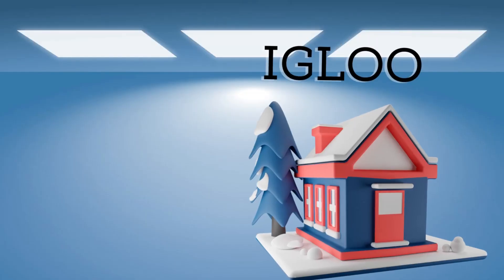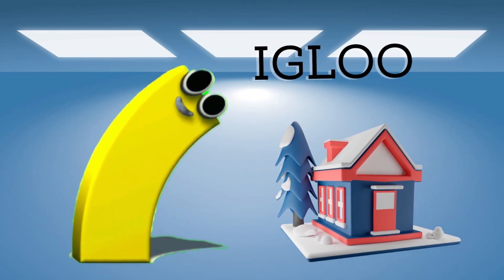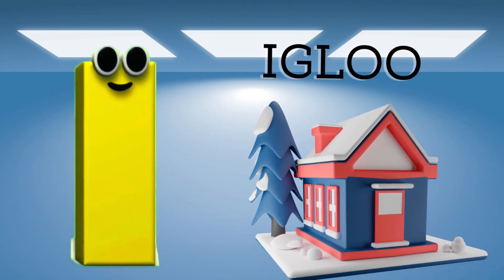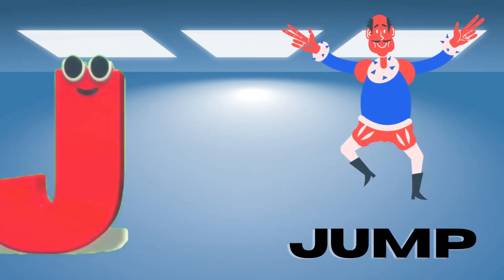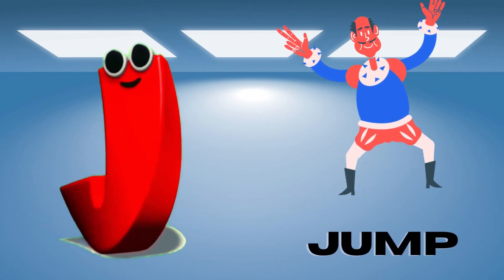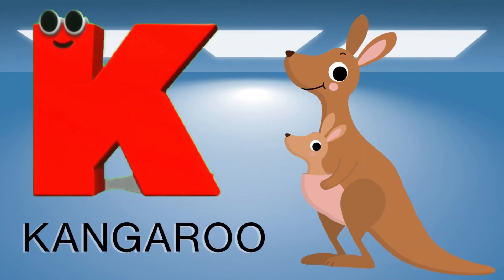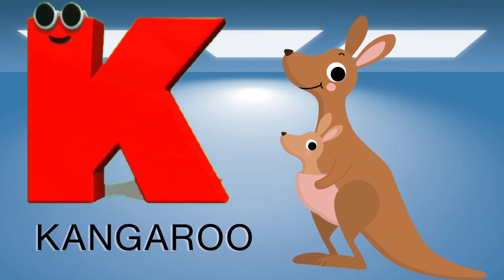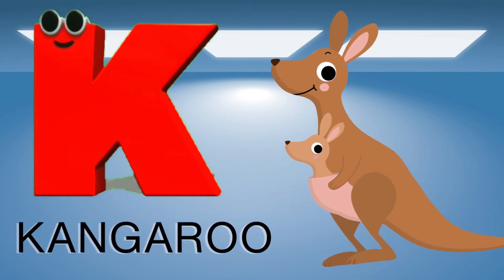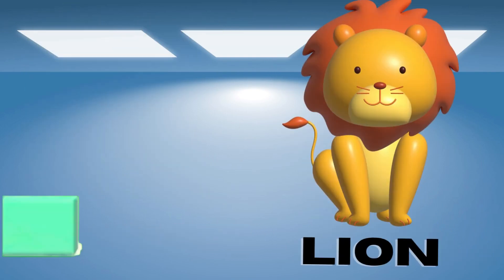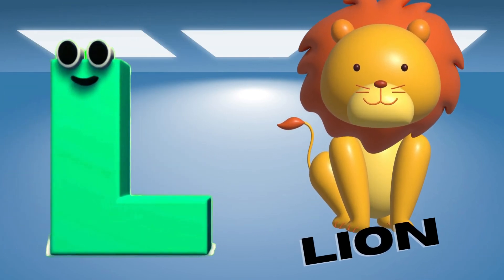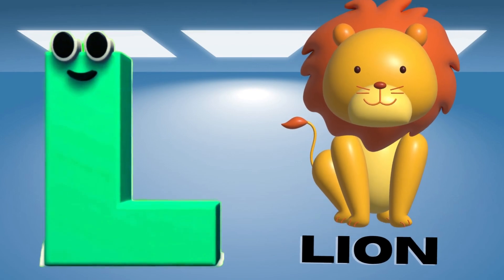I is for igloo, i-i-igloo. J is for jump, j-j-jump. K is for kangaroo, k-k-kangaroo. L is for lion, l-l-lion.